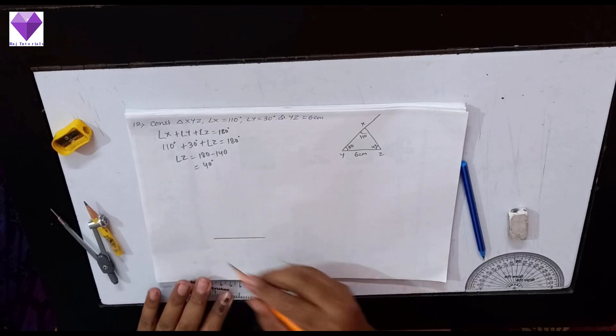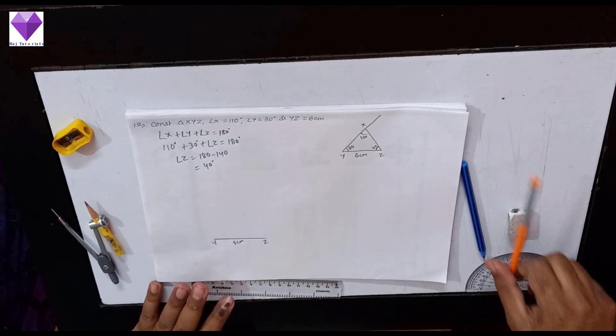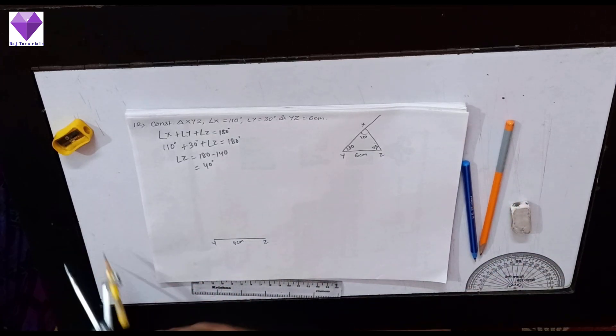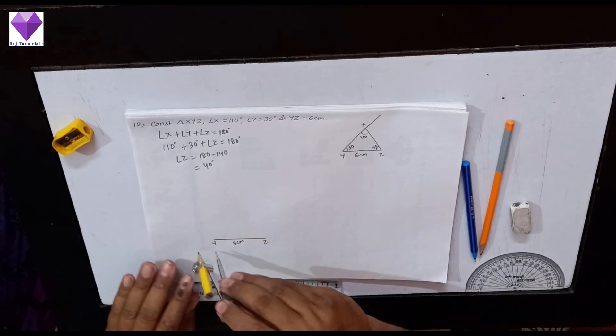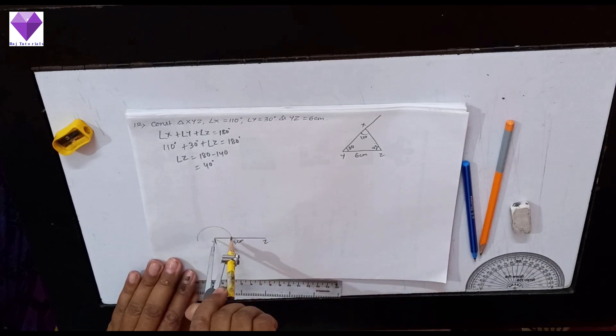Base YZ as 5 cm. Now here at Y I have to draw a 30 degree angle, so I will make 60 and bisect that. To do that, at Y I am making a semicircle.